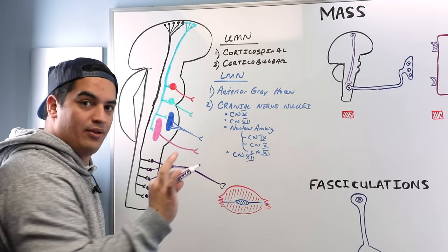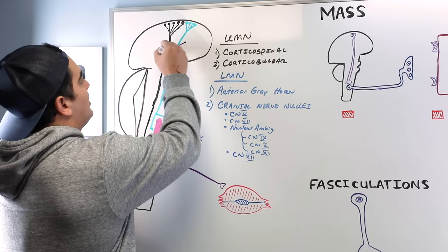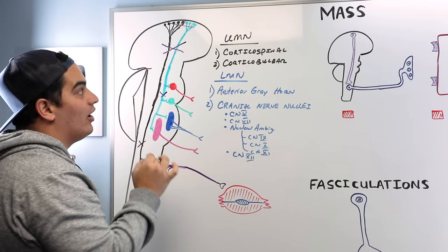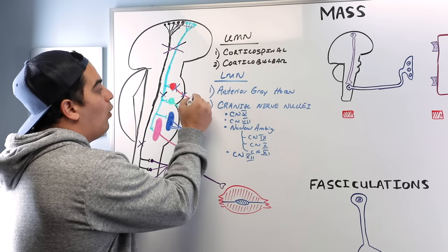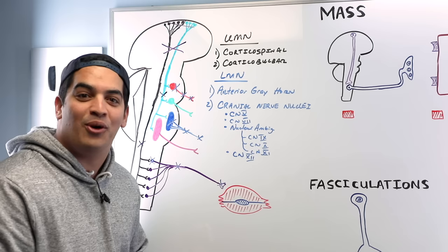To define the lesions: damage anywhere from the cerebral cortex all the way down the corticospinal or corticobulbar pathway is an upper motor neuron lesion. Damage to any of the cranial nerve nuclei, the cranial nerve itself, or the axon terminal — or damage to the anterior gray horn cell body, its axon, or axon terminal — constitutes a lower motor neuron lesion.